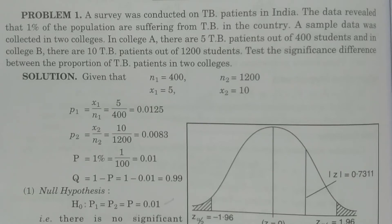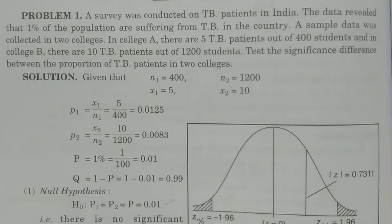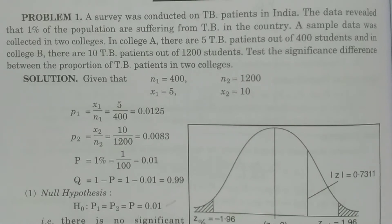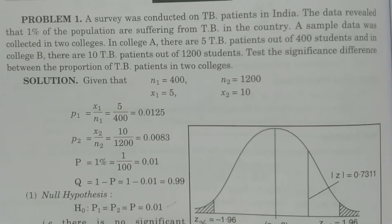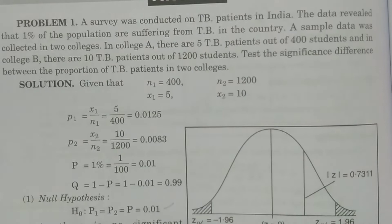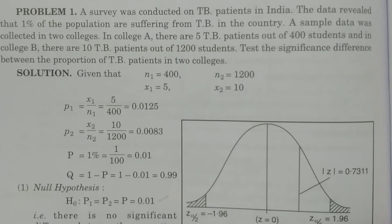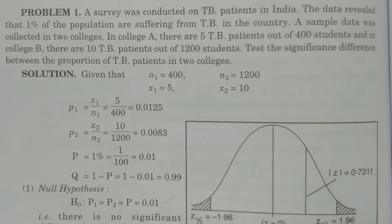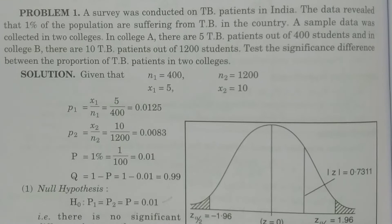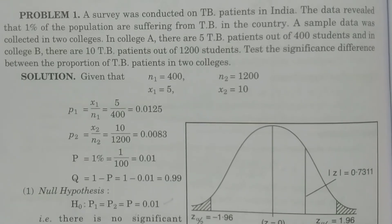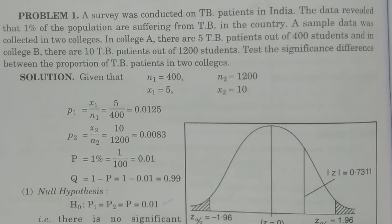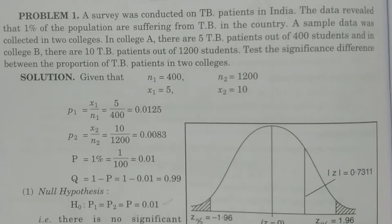Welcome to BSc Statistics students. This is an e-class on the law for test for two proportions problems. This is Problem 1: test for two proportions. We look at the case where capital P1 is equal to capital P2 is equal to capital P — whether capital P is known or not known.